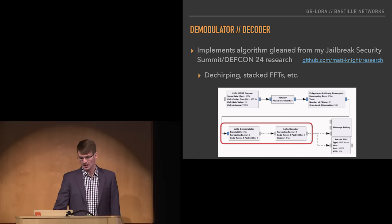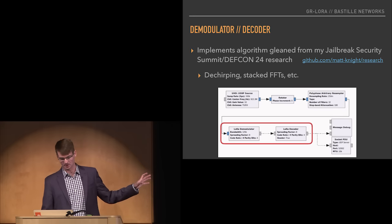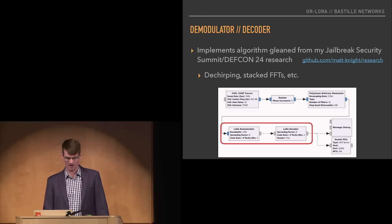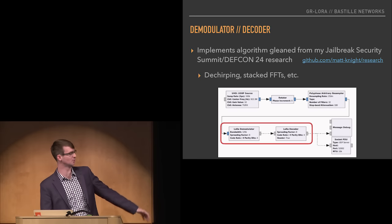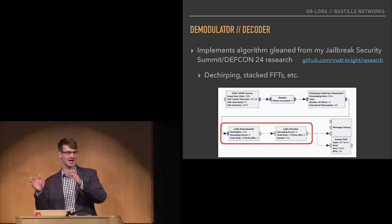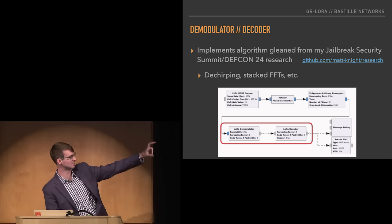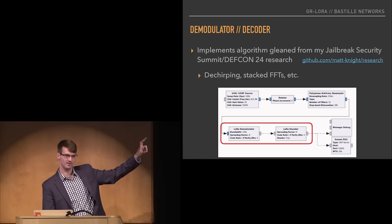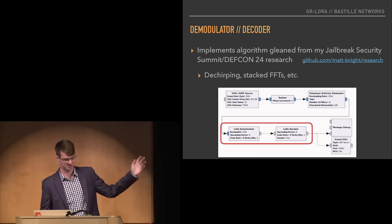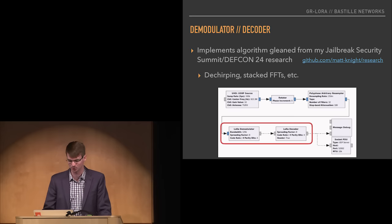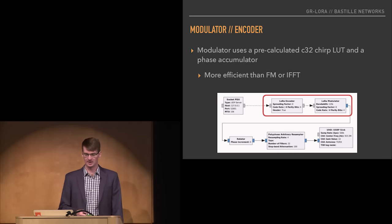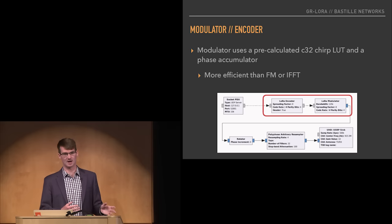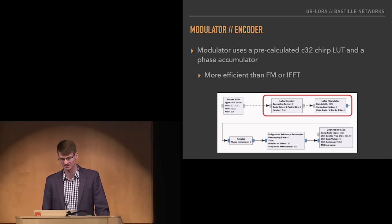The demodulator and decoder implement the algorithm we discussed, with stacked FFTs — all details are online. One cool picture is the overlapped FFT produced by the GNU Radio module looking for the SFD. You can see how as we shift samples through the FFT input buffer, the SFD comes into frame, and at the bottom you can see where the threshold kicks and we jump out of that state. The modulator takes a different approach — rather than an FFT or IFFT-based solution, I pre-generate a complex chirp lookup table and use a phase accumulator for more direct synthesis, which is more computationally efficient than an IFFT solution.